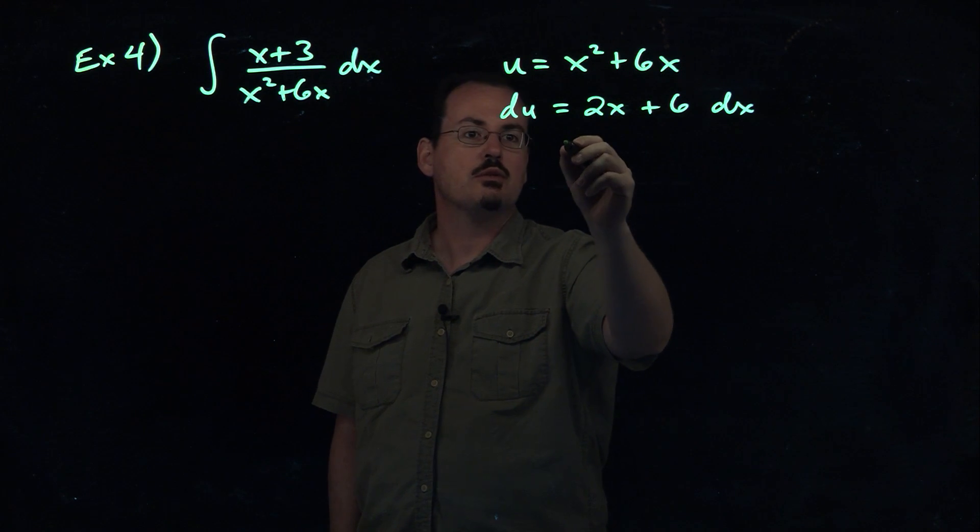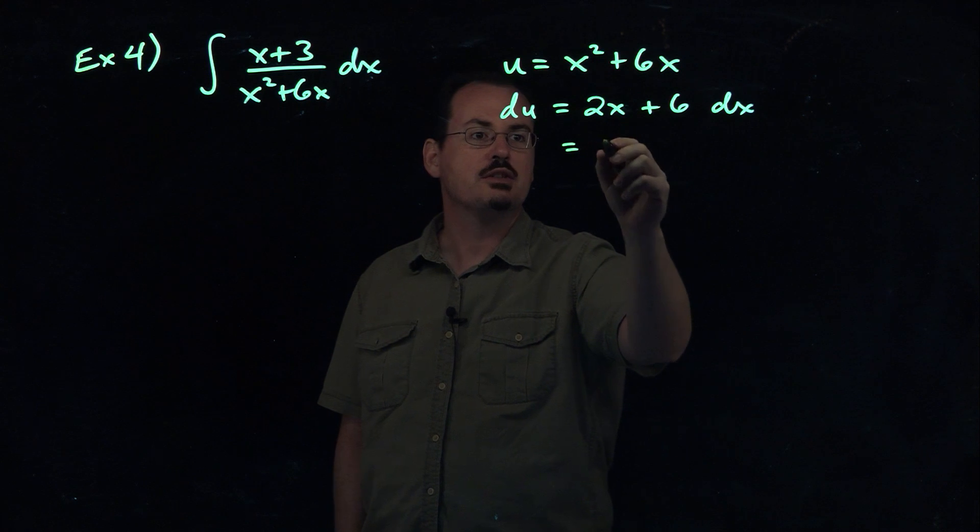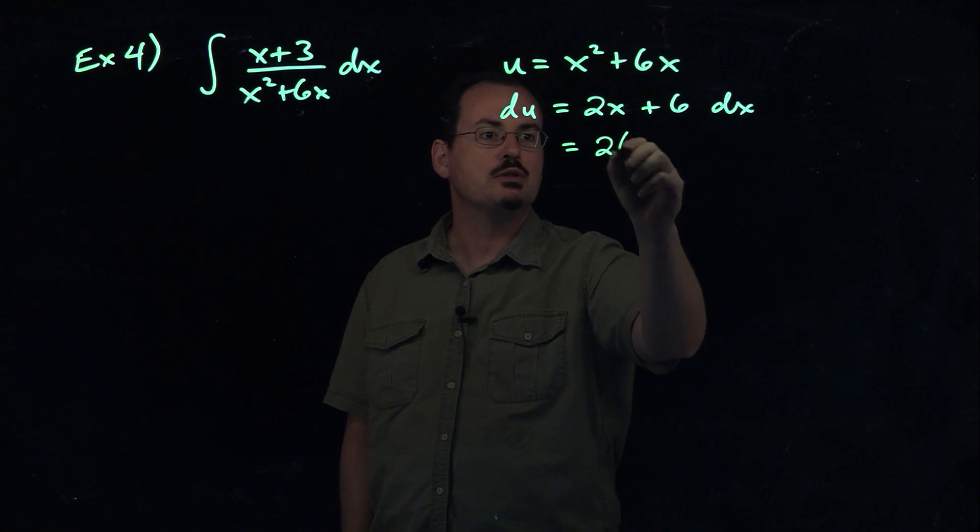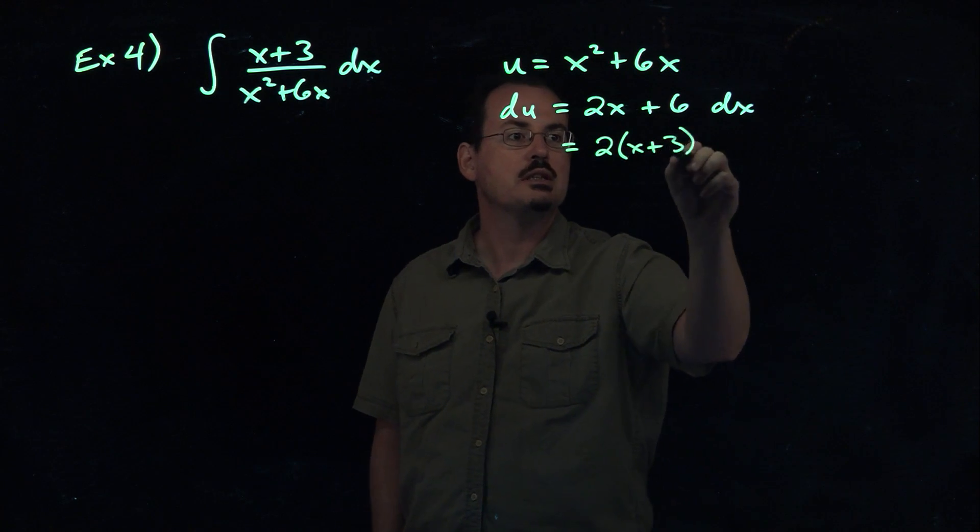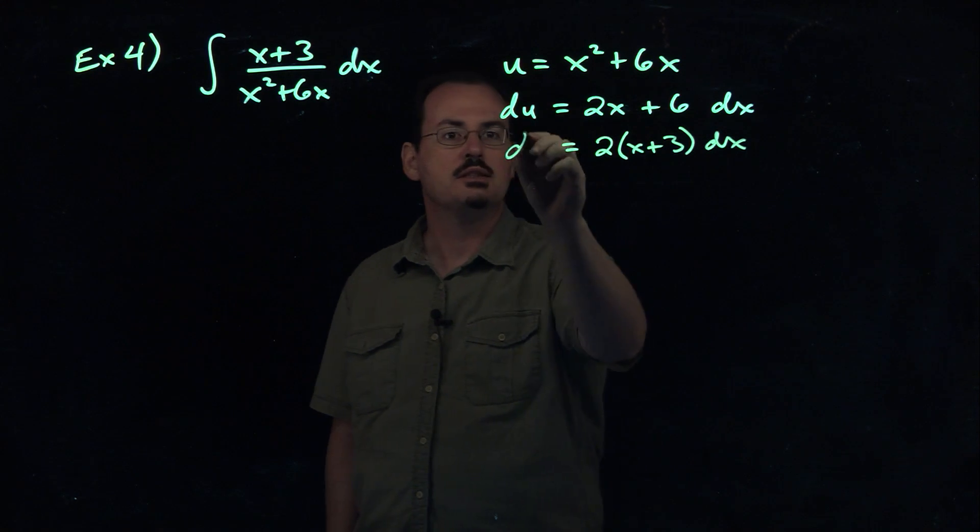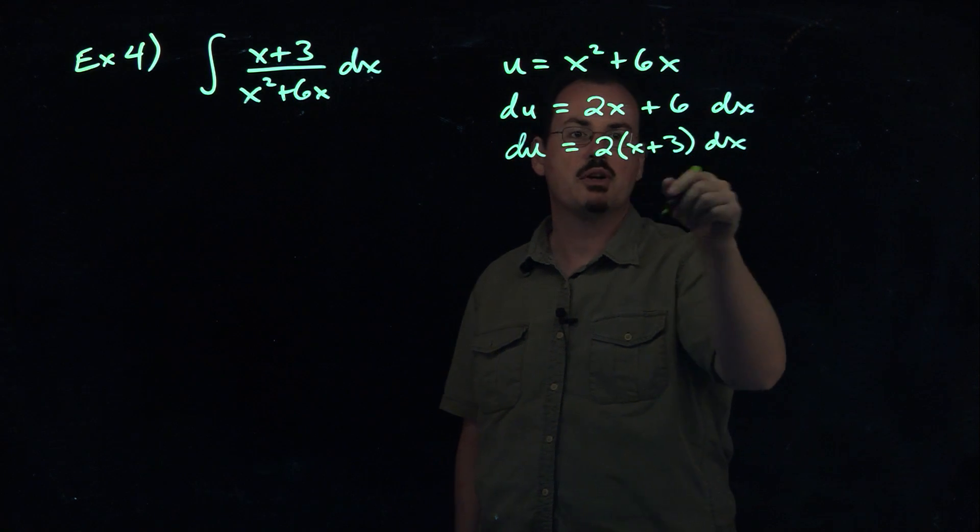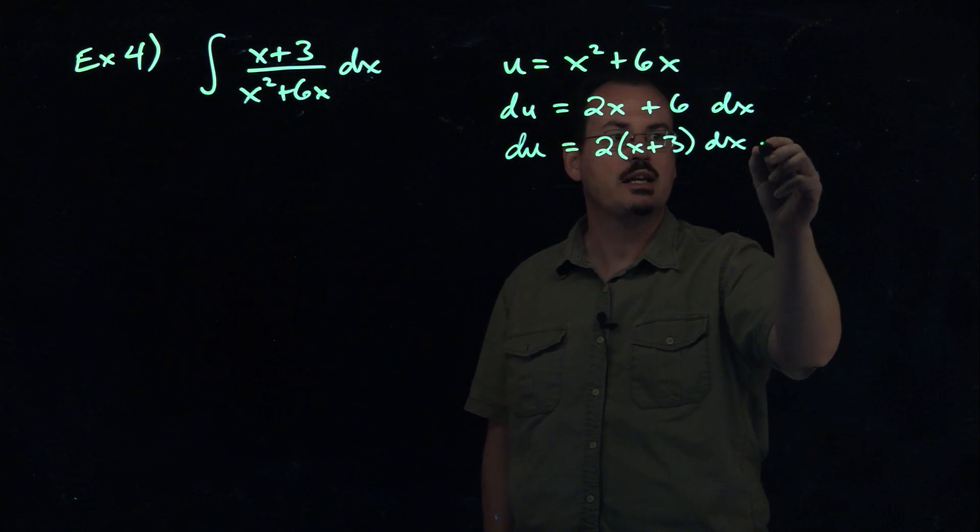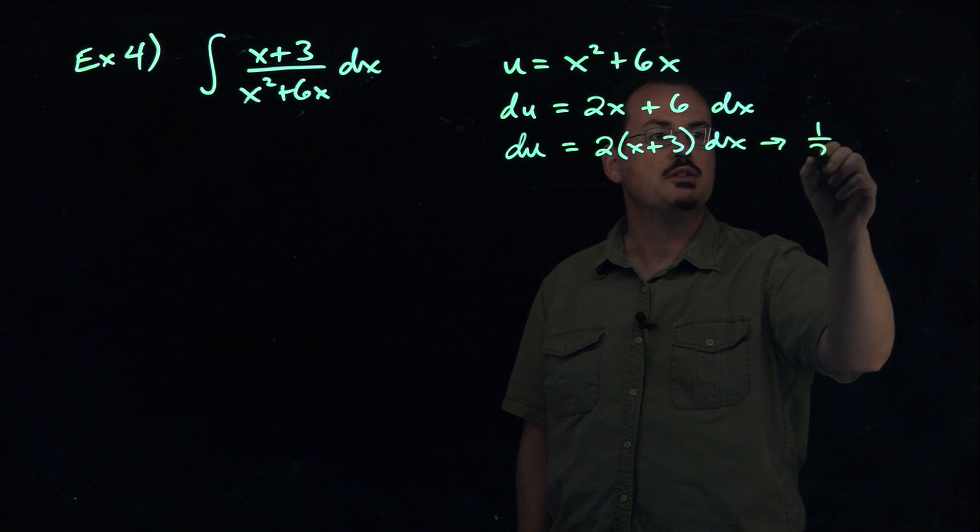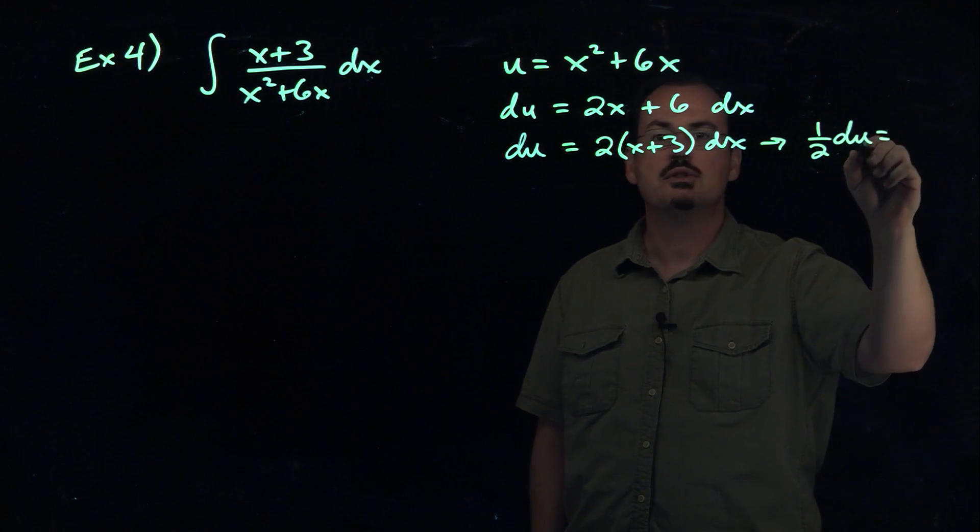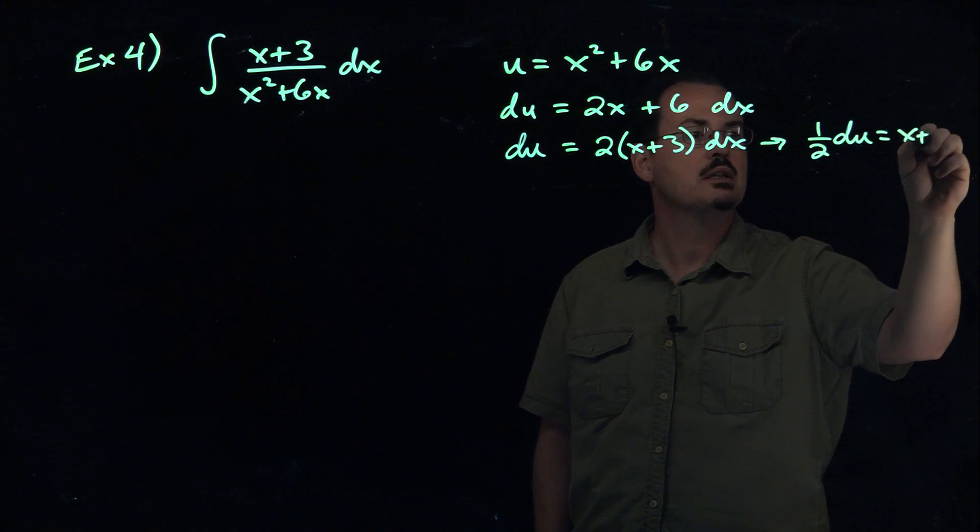It's pretty close to what we see here. What we can do is just factor a 2 out of that thing. So we'll get 2 times x plus 3 dx. That's the du. Now that 2 is not there, so we don't really need to see that as part of the dx. The way that we get rid of it is by dividing. So we'll see 1/2 du is equal to x plus 3 dx.